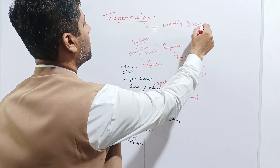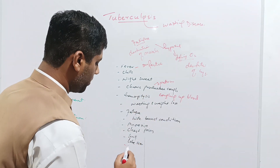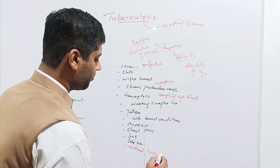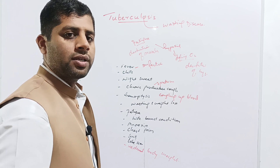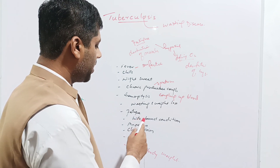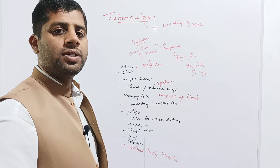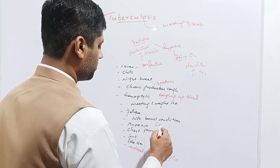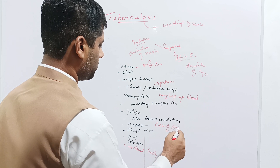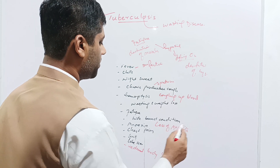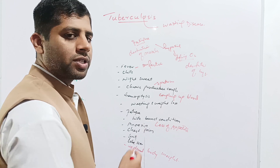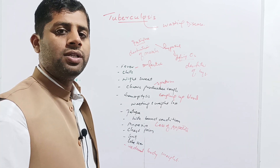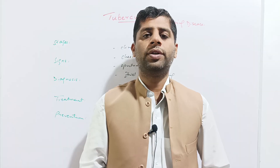Tuberculosis is also called a 'wasting disease' because body weight is significantly reduced. The patient loses muscles and body weight, appearing in a very thin condition. There is also anorexia, or loss of appetite. Additionally, there is chest pain due to formation of tubercles on the lungs, and scar formation on the upper lobes of the lungs related to lung destruction.